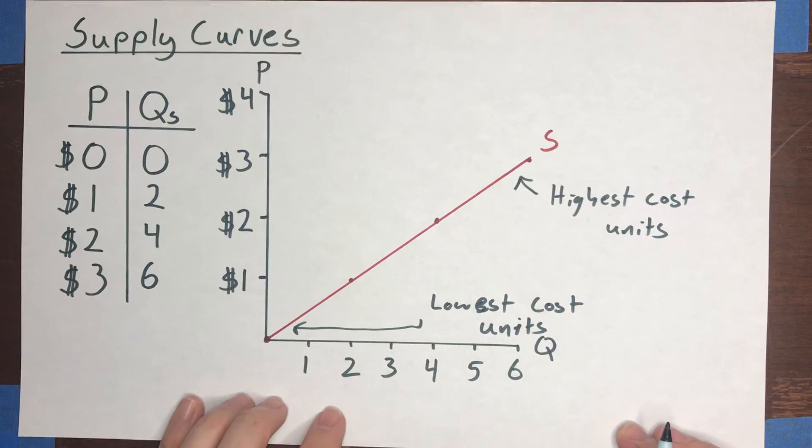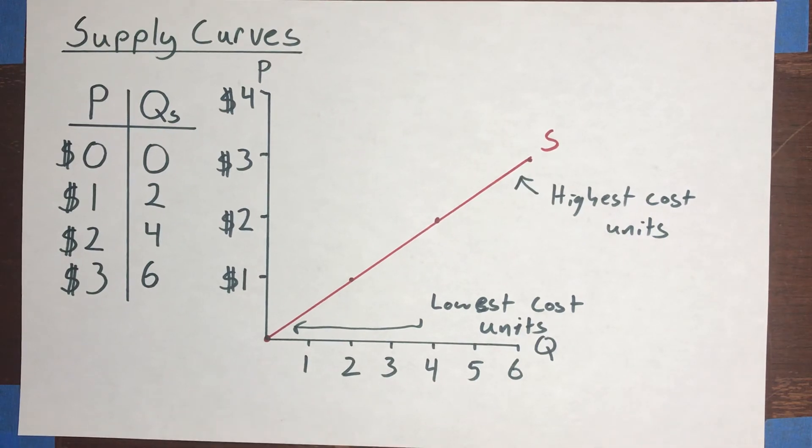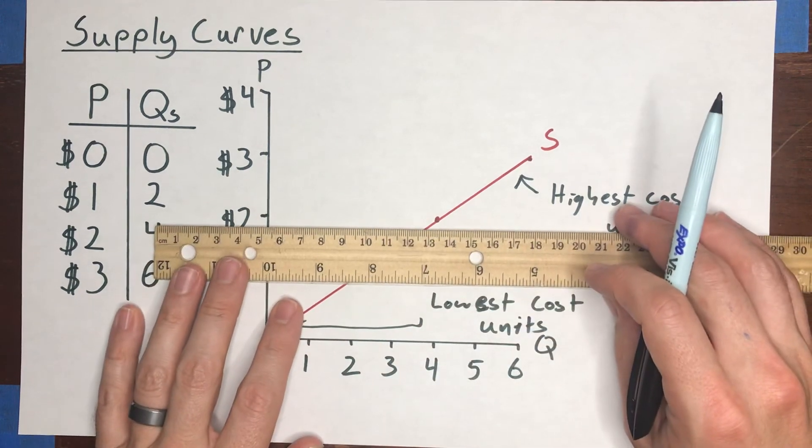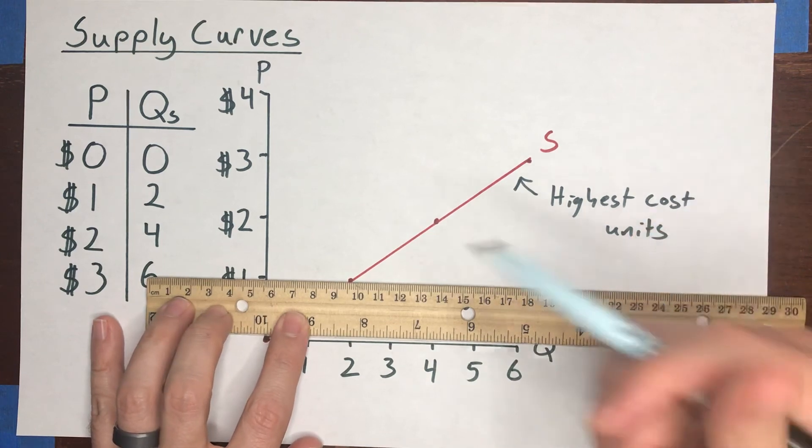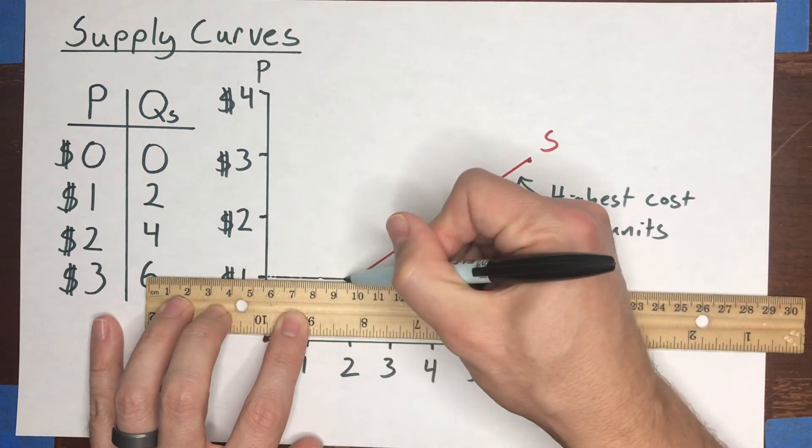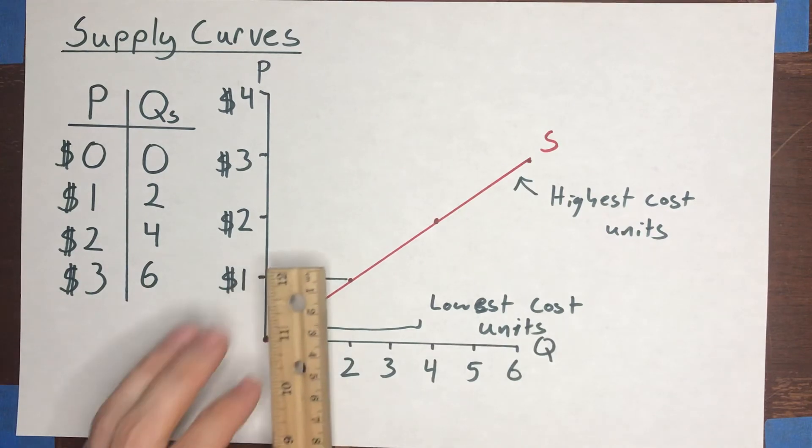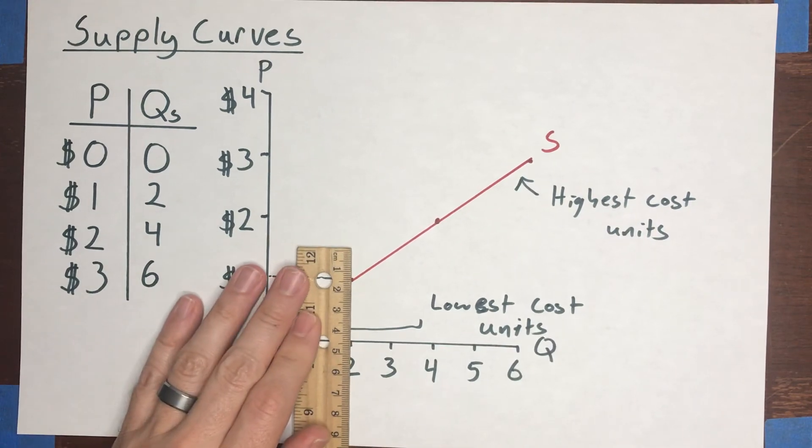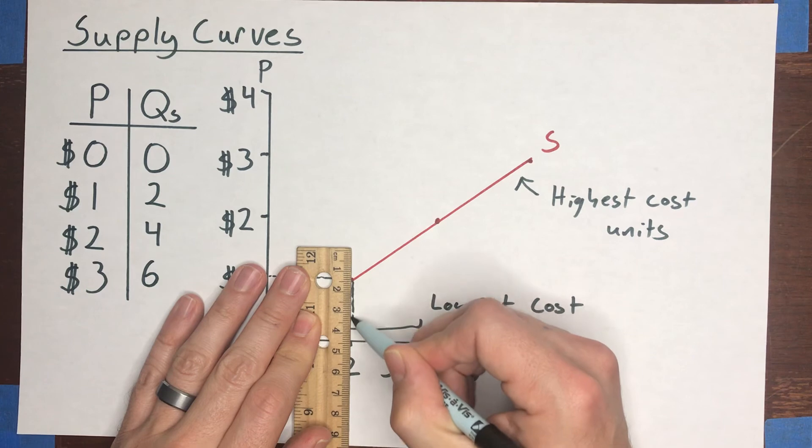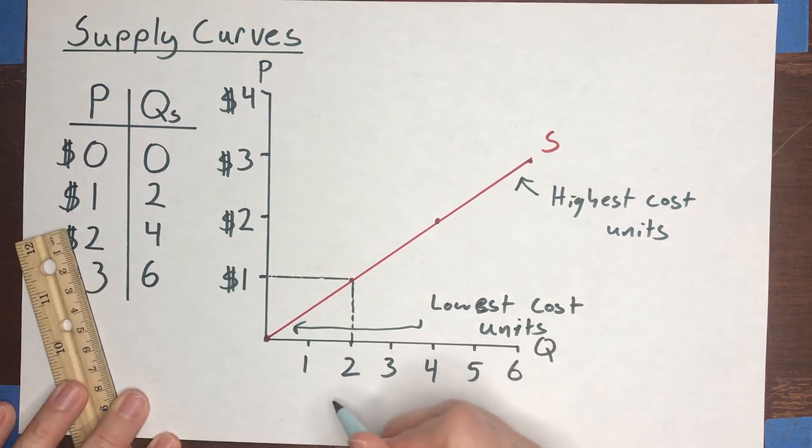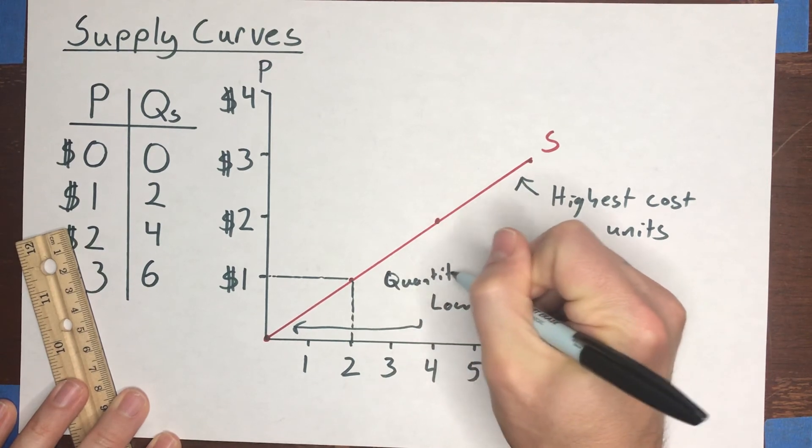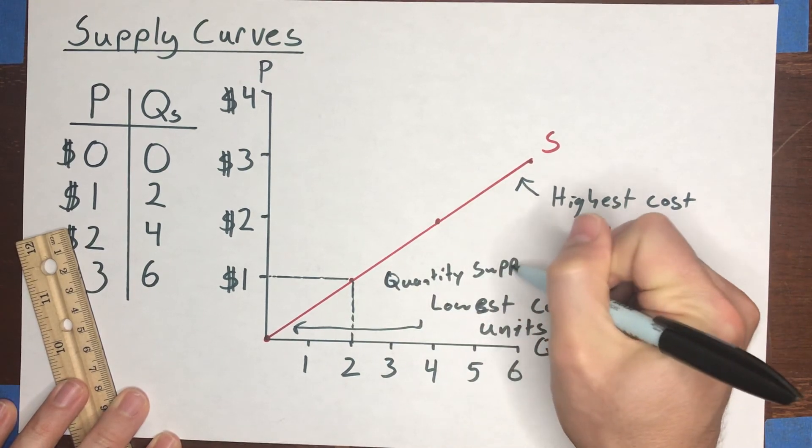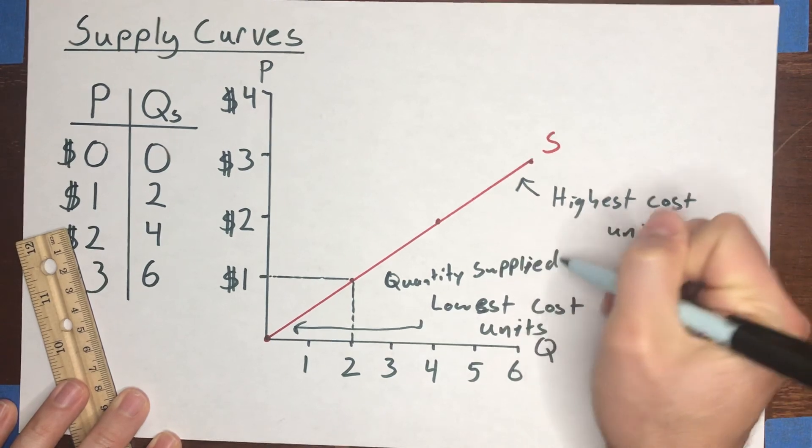Just like with a demand curve, you can read the supply curve in one of two ways. One is to pick a price and draw a line from that price over to the supply curve. So at a price of, say, $1, plug that price into the supply curve, and wherever it hits the supply curve, draw a straight line down. And that gives you the quantity of units supplied.